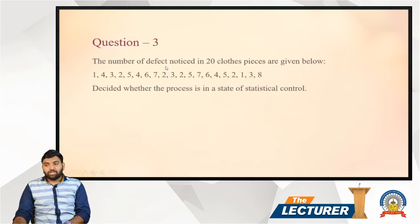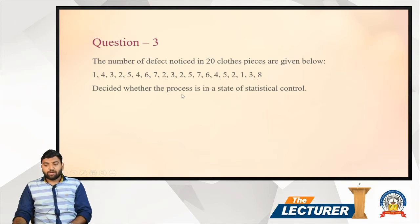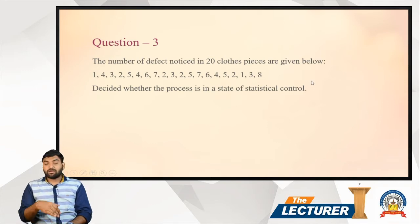The number of defects noticed in 20 cloth pieces are given below. The number of defects noticed is: 1, 4, 3, 2, 5, 4, 6, 7, 2, 3, 2, 5, 7, 6, 4, 5, 2, 1, 3, 8. Decide whether the process is in a state of statistical control.